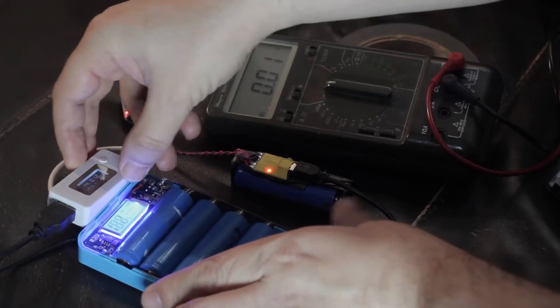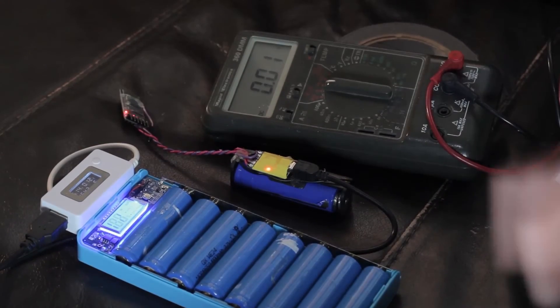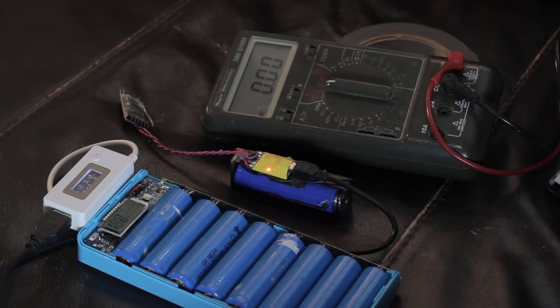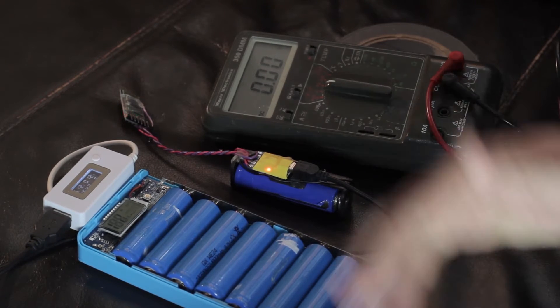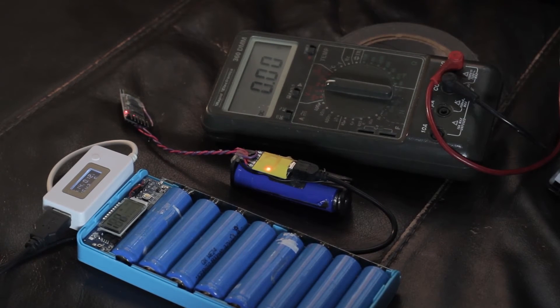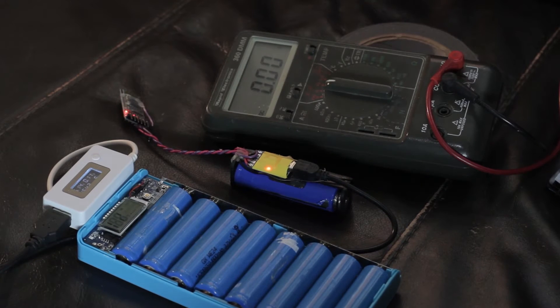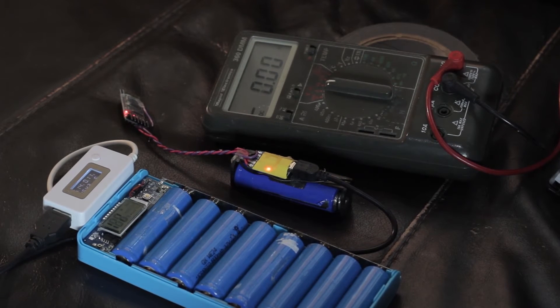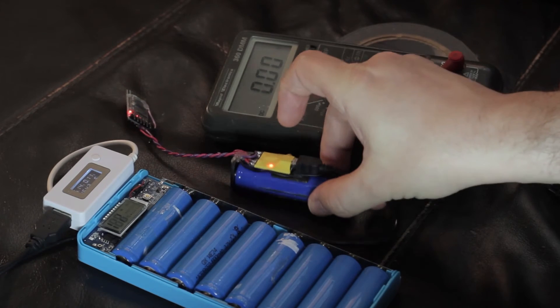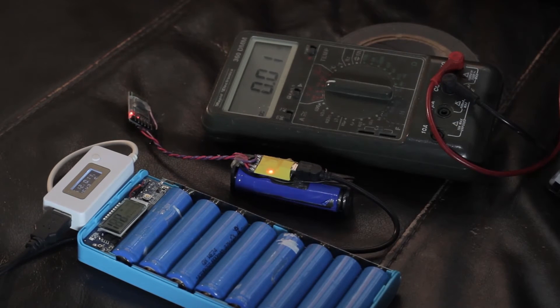So it appears we've used about 15%, which equates to about a single cell to charge this single cell. Which almost makes sense, obviously the losses and things involved are making it a little bit lossier, so it's not one cell for one cell. Because this is a lower capacity cell, it's nearly working out that way.